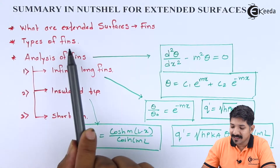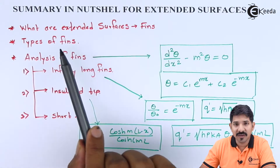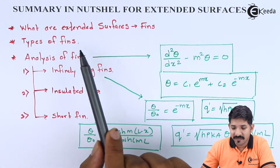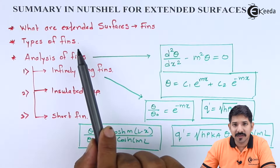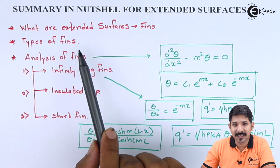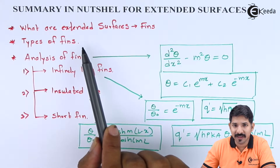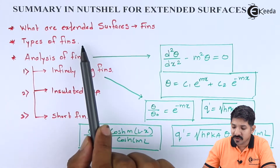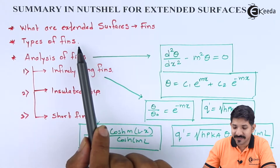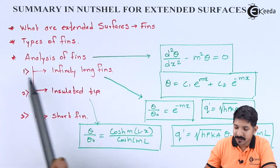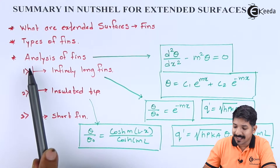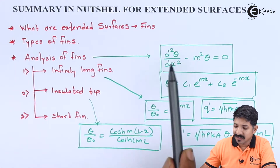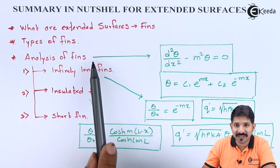We have also seen the various types of fins — the rectangular one, the taper one, the circular one, and the conical one. So the types of fin based on its geometry have been covered. For the analysis, we considered a uniform cross-sectional rectangular fin.